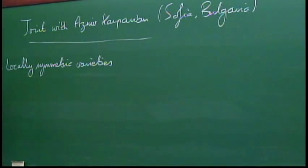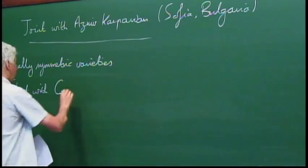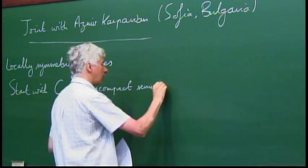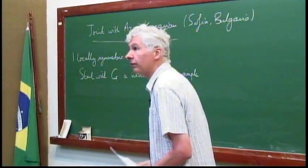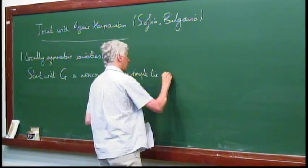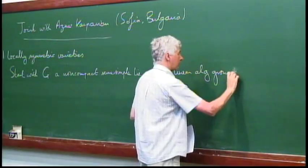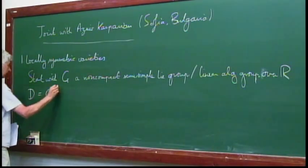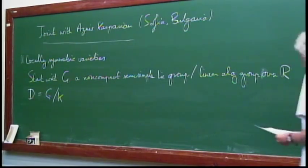Very often you find yourself in the following situation in algebraic geometry. I'll start with G, which I want to be non-compact, semi-simple — well, a Lie group, but I really want to think of it as a real linear algebraic group. Associated with this, I have a quotient by some maximal compact subgroup — connected maximal compact subgroup, I suppose.